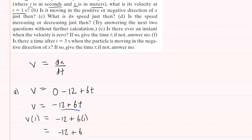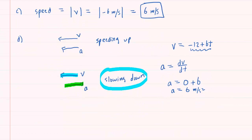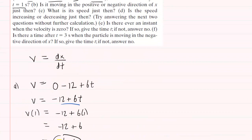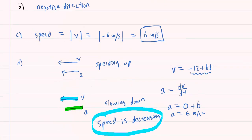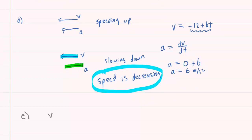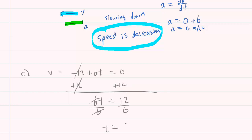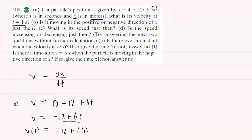The way part D was phrased — is the speed increasing or decreasing — we would say the speed is decreasing, which is another way of saying it's slowing down. That is the correct answer for part D. Now on to part E: is there ever an instant when the velocity is 0? We can explore that by taking our velocity, negative 12 plus 6t, and setting it equal to 0. Adding 12 to both sides gives 6t equals 12. Dividing both sides by 6, we get t equals 2 seconds. So yes, there is a time at which the velocity equals 0, and it happens to be at t equals 2 seconds.